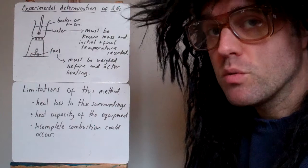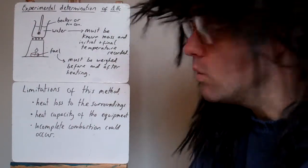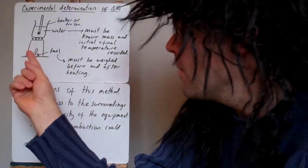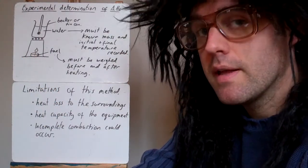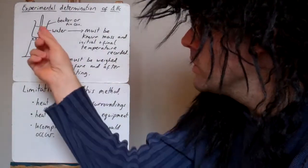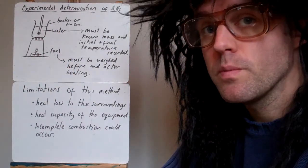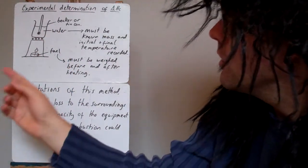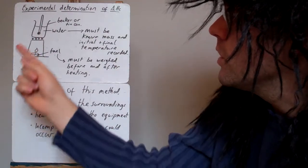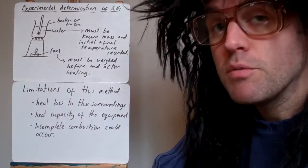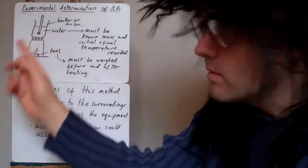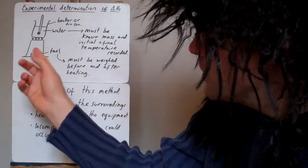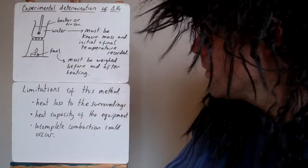We need to know the initial temperature as well before we start heating the water and we need to know the mass of the fuel before we start burning it and the mass of it at the end. And we also need the final temperature of the water too. So basically then, you pre-weigh the mass of fuel, you pre-weigh the amount of water, you measure the temperature at the beginning, you light the fuel for a period of time, you measure the maximum temperature change and then you measure how much fuel has been burnt.